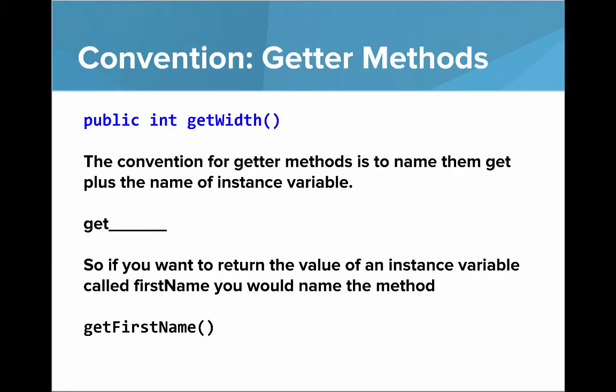There's a convention for getter methods: name them 'get' plus the name of the instance variable. So if you want to return the value of an instance variable called firstName, you would name that method getFirstName.